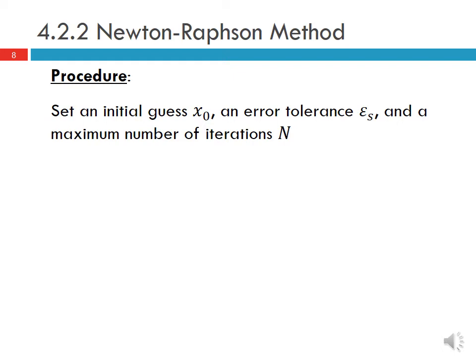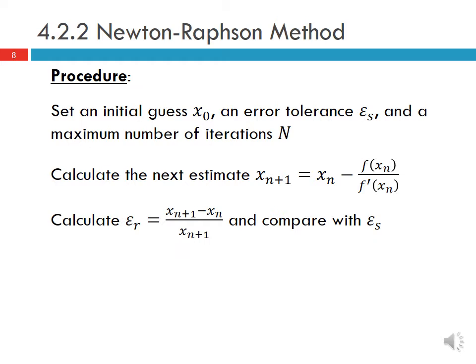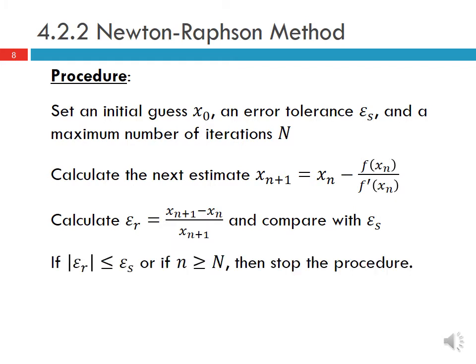Here's how the procedure works. We set an initial guess x0, an error tolerance epsilon s, and a maximum number of iterations n. Then we calculate the next estimate: xn plus 1 equals xn minus f of xn divided by f prime of xn. We then calculate our approximate relative error and compare with epsilon s. If the absolute value of epsilon r is less than or equal to epsilon s, or if we've reached the maximum number of iterations, we stop. Otherwise, we repeat.